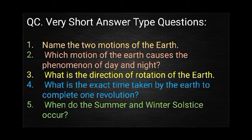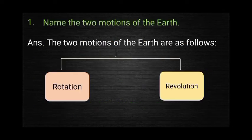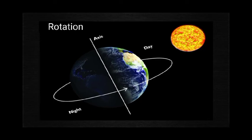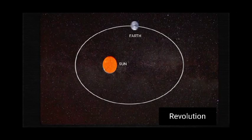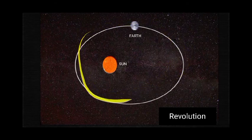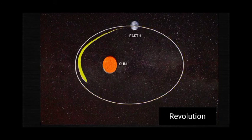Now moving to Very Short Answer type questions. We have done these before, so I am just explaining the answers again. Question 1: Name the two motions of the Earth. The two motions are: first, rotation — the daily spinning movement of the Earth on its own axis from west to east; and second, revolution — the annual movement of the Earth around the sun along a fixed path called the orbit.